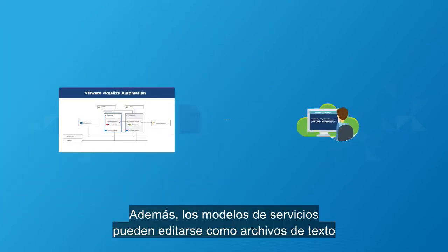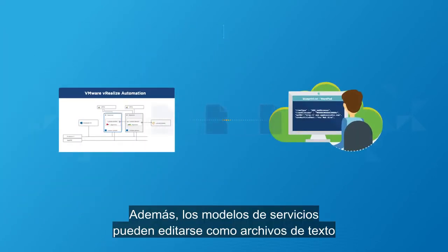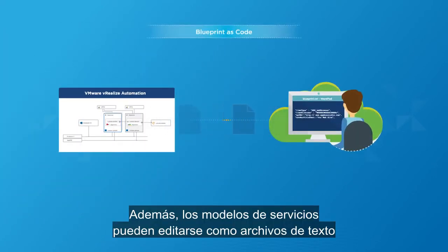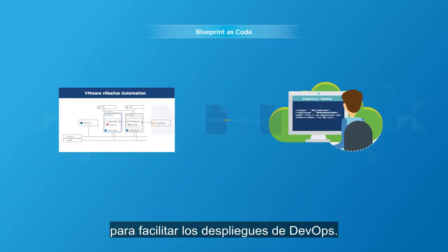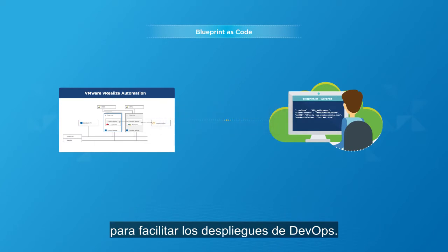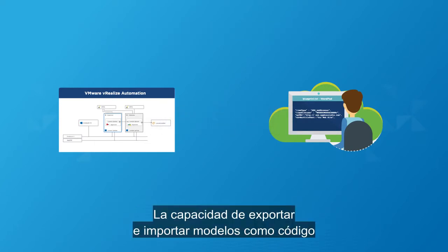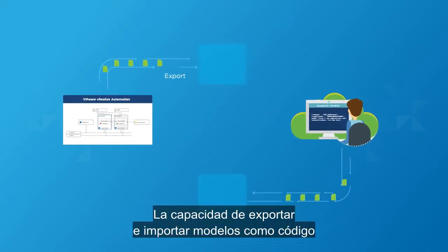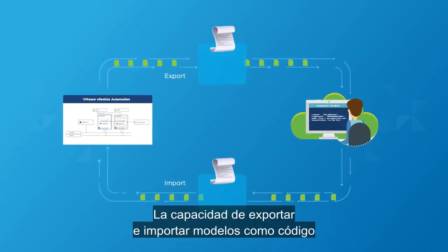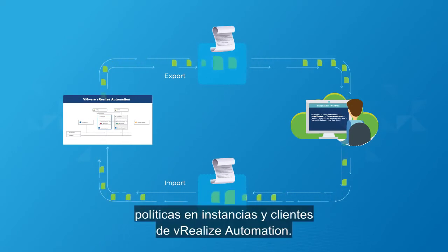Additionally, service blueprints can be edited as text files to facilitate DevOps deployments. The ability to export and import blueprints as code improves version control and sharing of policies across vRealize Automation instances and tenants.